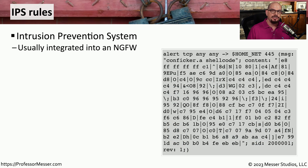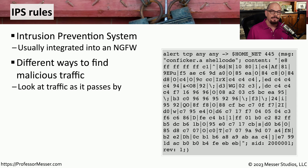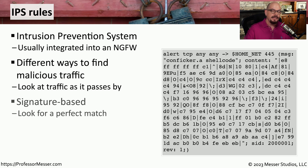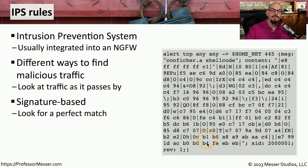Just as firewalls have rule bases, so do intrusion prevention systems, or IPS. Today, an IPS is often included as part of a next generation firewall with its own rule base. The IPS monitors traffic in real time as it passes through, using signatures loaded on the IPS to recognize malicious software traversing the network. Many rules built into an IPS use a signature — for example, a signature written for the Conficker worm. If traffic matches the signature, the IPS can react and decide whether to allow or block that traffic.